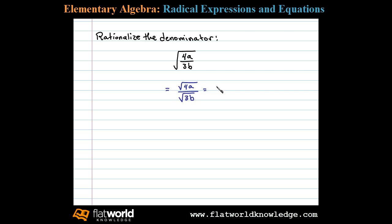Here the square root of 4 is 2, so in the numerator we have 2 times the square root of a over the square root of 3b. Now at this point to rationalize the denominator we multiply by a special form of 1.